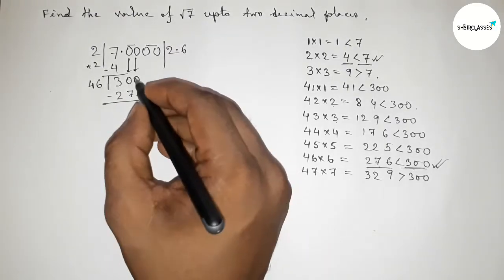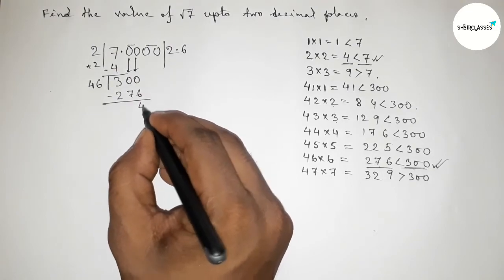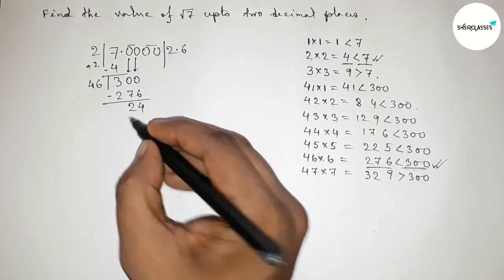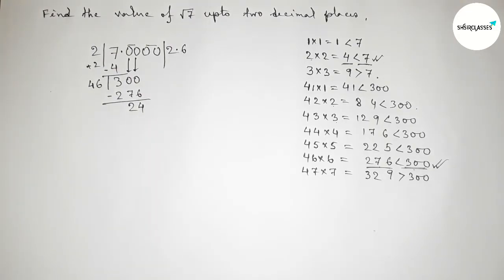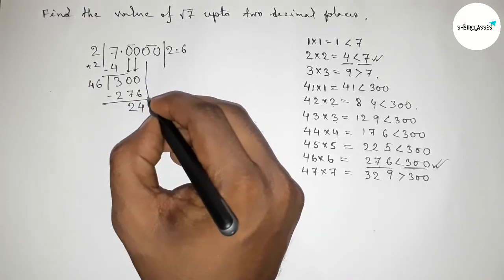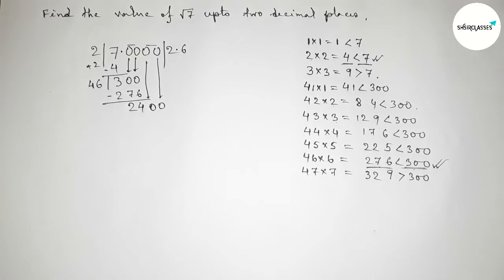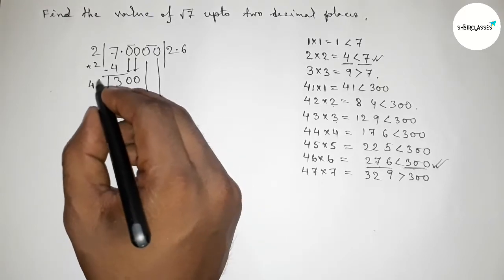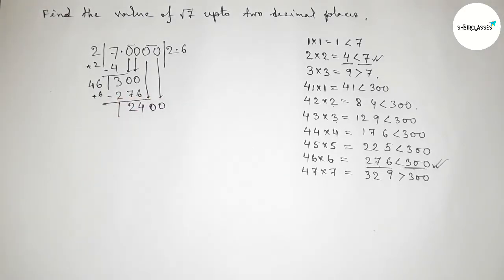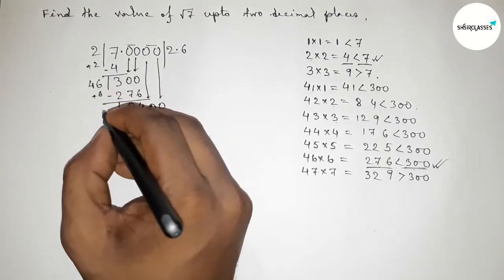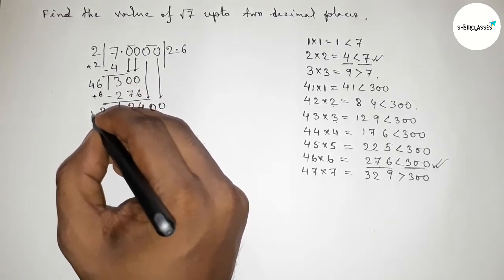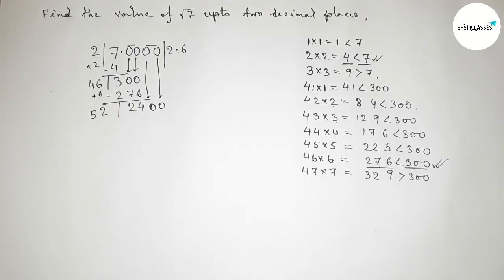Subtracting 300 minus 276: we get 24. Now bring down the next pair of zeros, making 2400. Drawing the division line. The last digit of our current number is 6, so we add 46 plus 6 equals 52. The new divisor starts with 52.